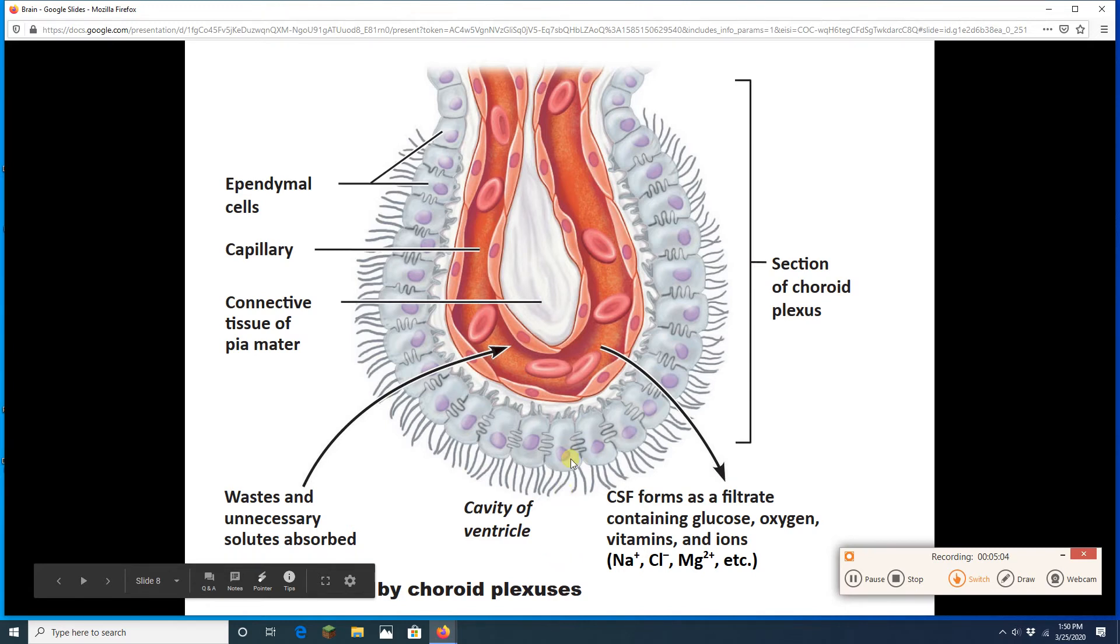And meanwhile, waste and other stuff can get absorbed. But what I want you to notice is these ependymal cells. These ependymal cells, look at their cilia. The cilia provide the sweeping action that is going to move the CSF. All right.